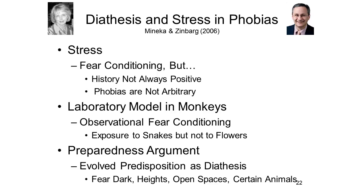In the Meinica experiments, the monkey showed observational fear conditioning to snakes, but not to flowers. Monkeys who observed another monkey acting fearfully in the presence of flowers didn't acquire a fear of flowers. And that brings us to the second problem — that phobias are not arbitrary. You'll remember that Martin Seligman proposed an argument about preparedness and learning. By virtue of our evolutionary history, each species is prepared to acquire some stimulus-response associations very readily, while some associations are unprepared, and still other associations are contraprepared — the animal simply can't acquire certain associations.